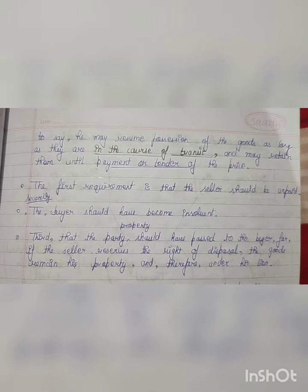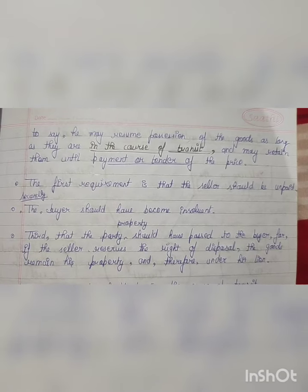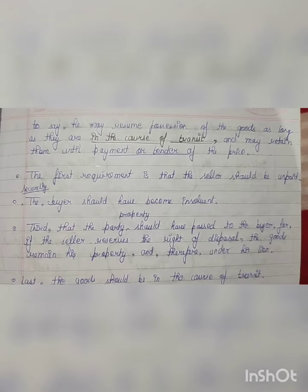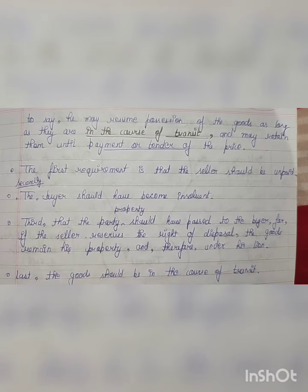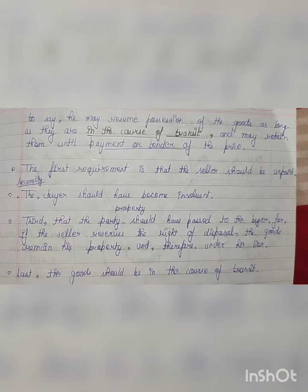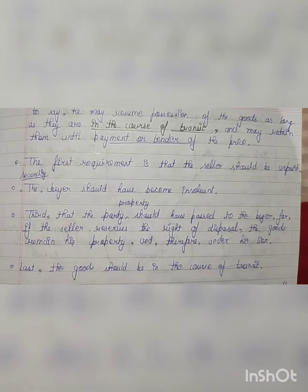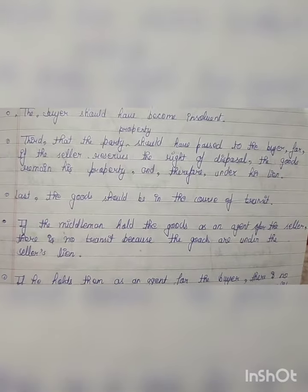The first requirement is that the seller should be unpaid. The second requirement is that the buyer should have become insolvent. The third requirement is that the property should have passed to the buyer — if the seller reserves the right of disposal, the goods remain his property and therefore under his lien. The fourth requirement is that the goods should be in the course of transit.